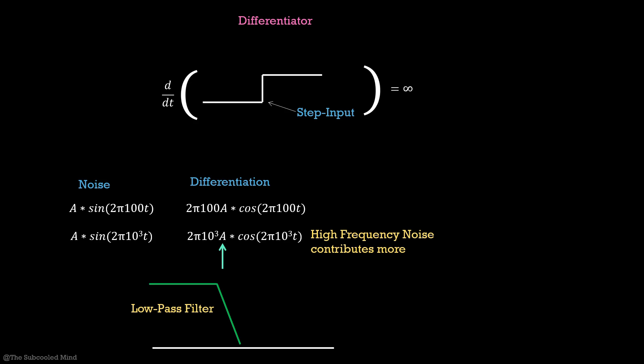We have seen earlier that differentiator term can be written in s domain as kd*s. But in applications, we will add a low pass filter n/(s+n) to minimize the high frequency impact. n is the cutoff frequency of the filter.